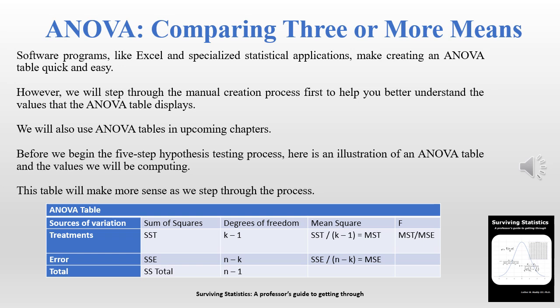Looking at the ANOVA table we see some terms we may not have seen before. We see SST — the SS stands for sum of squares — so we'll have the sum of squares for treatments, the sum of squares for error, and the sum of squares for total. We have K, which is the number of categories or means we're looking at. It'll make more sense as we continue building the ANOVA table manually.